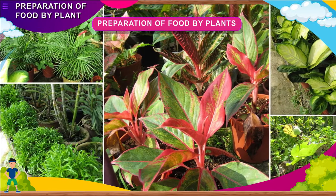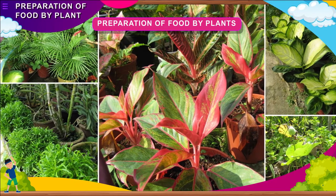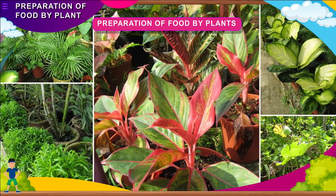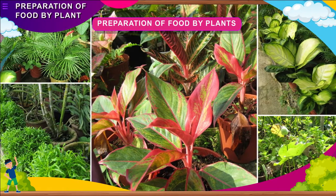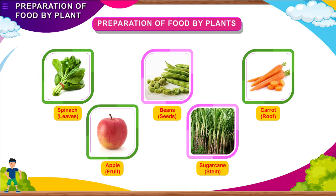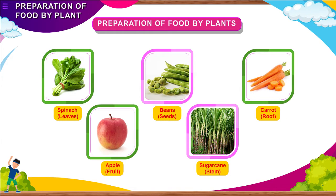Plants do not use all the food prepared by them. A part of the food is stored as starch in their parts, such as leaves, seeds, roots, fruits, and stems.